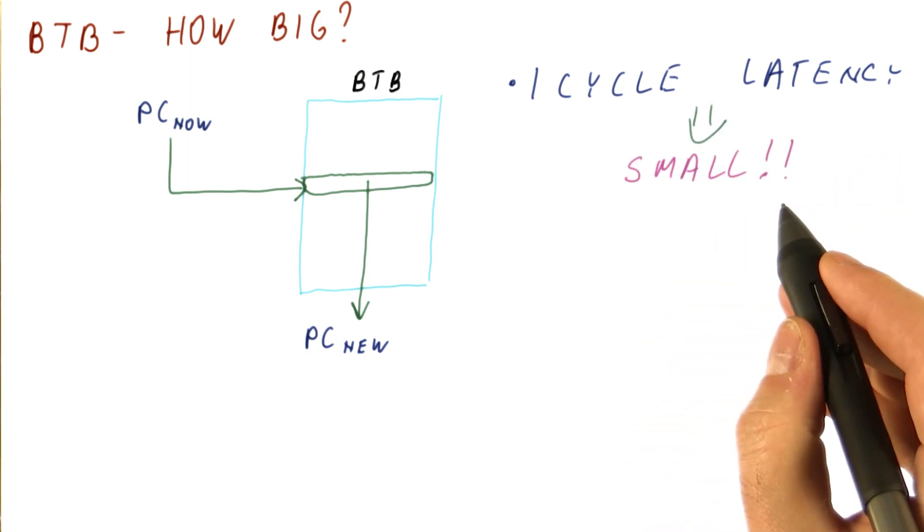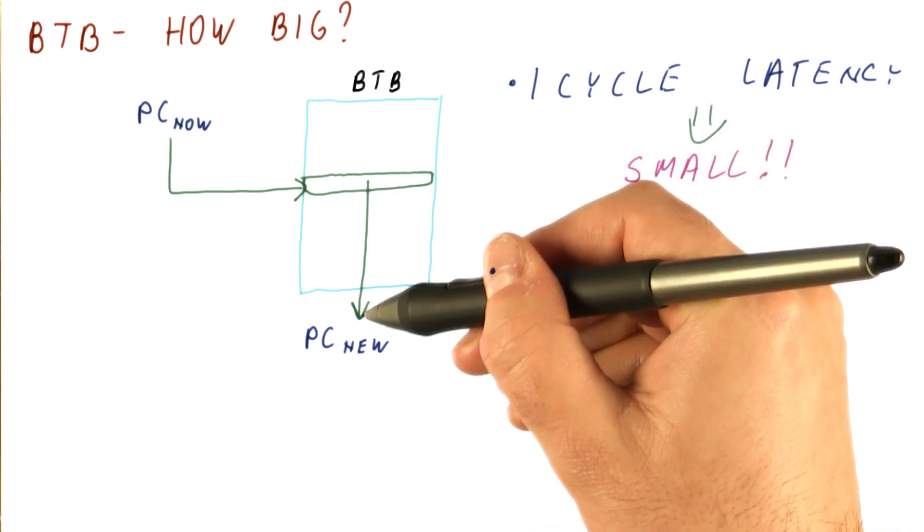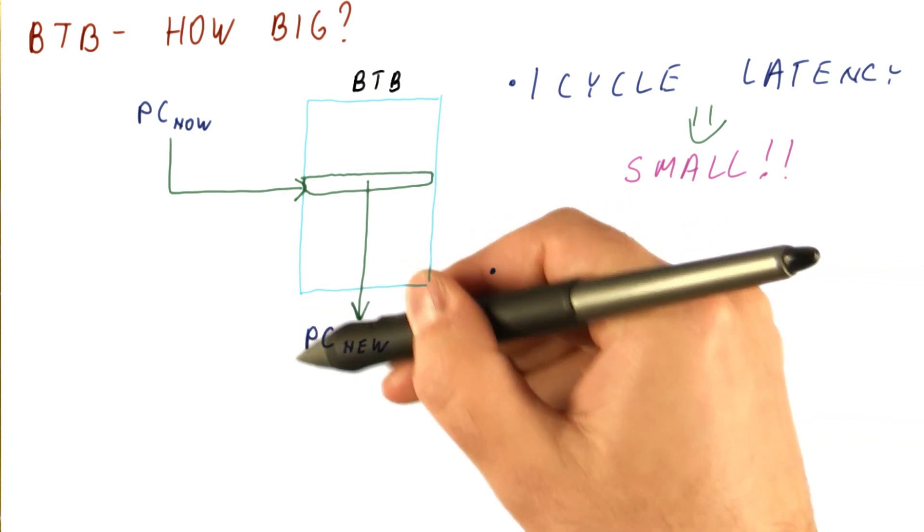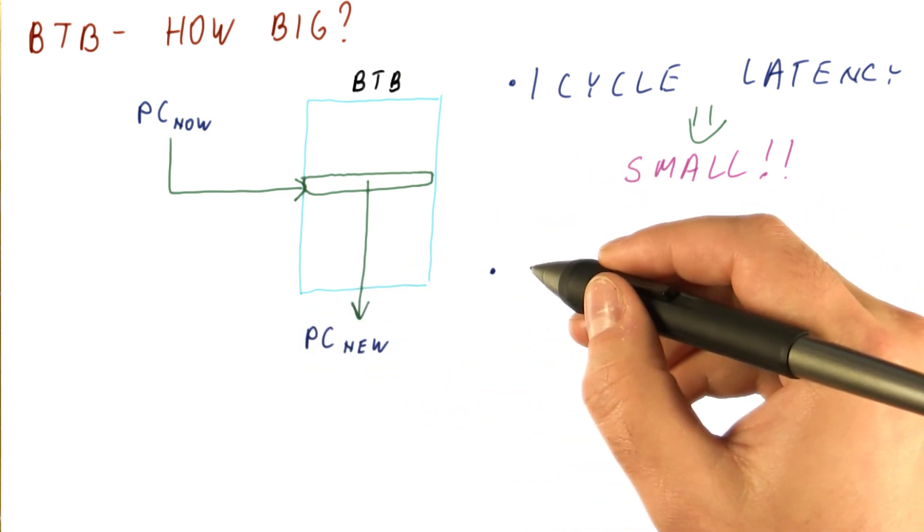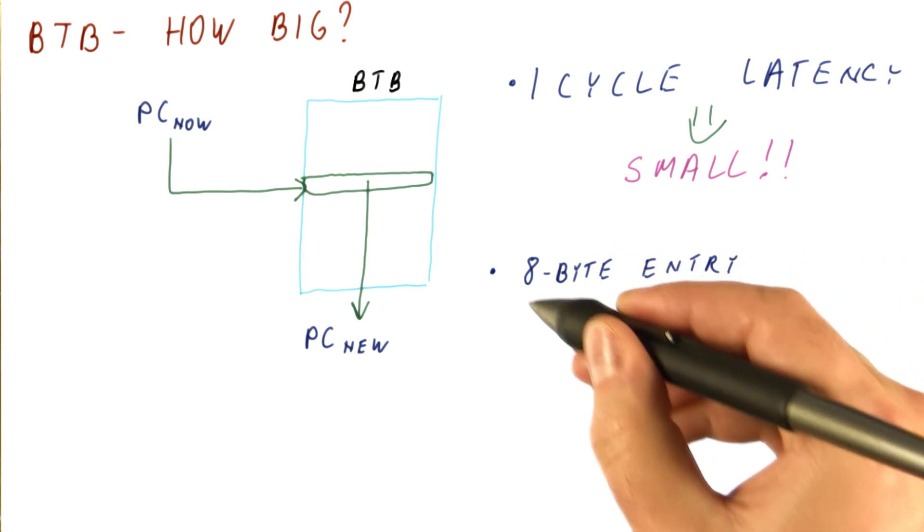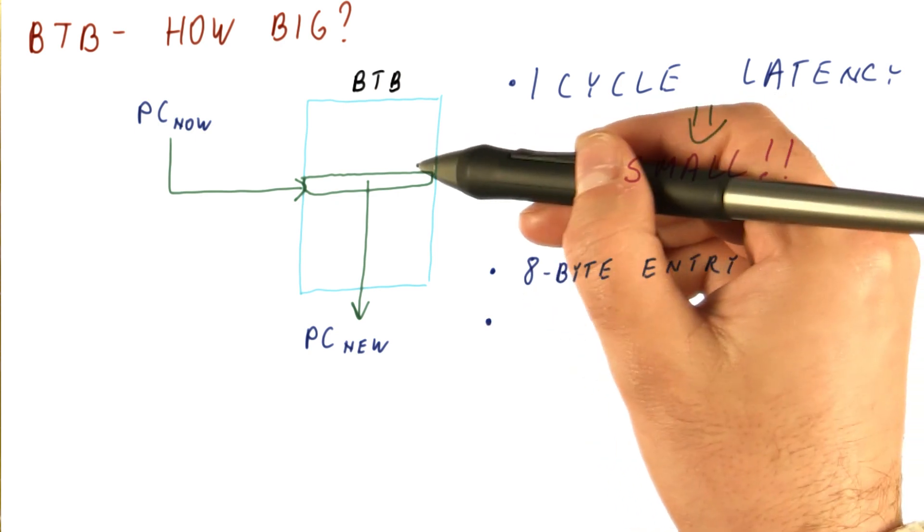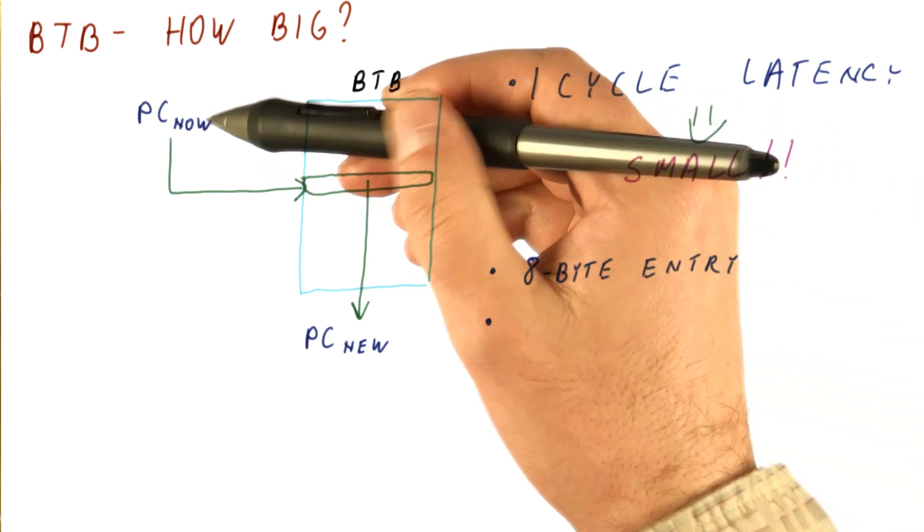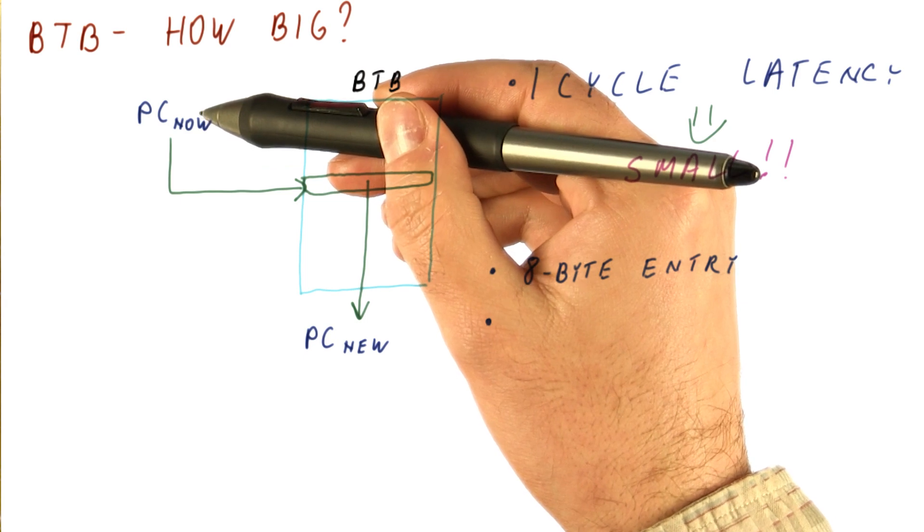However, it needs to contain an entire instruction address. Let's say we're using 64-bit addressing. That means each entry is 8 bytes. And we need one entry for each possible PC from which we can fetch.